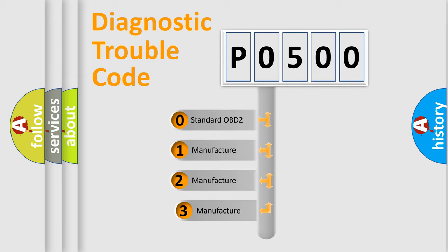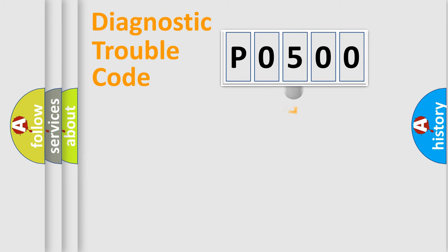If the second character is expressed as zero, it is a standardized error. In the case of numbers 1, 2, 3, it is a manufacturer-specific expression of the car-specific error.